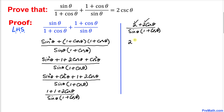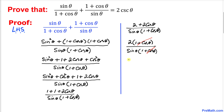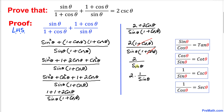Factoring gives us 2 times 1 plus cosine of theta, divided by sine of theta times 1 plus cosine of theta. The 1 plus cosine of theta in the numerator and denominator cancel, leaving us simply with 2 divided by sine of theta.